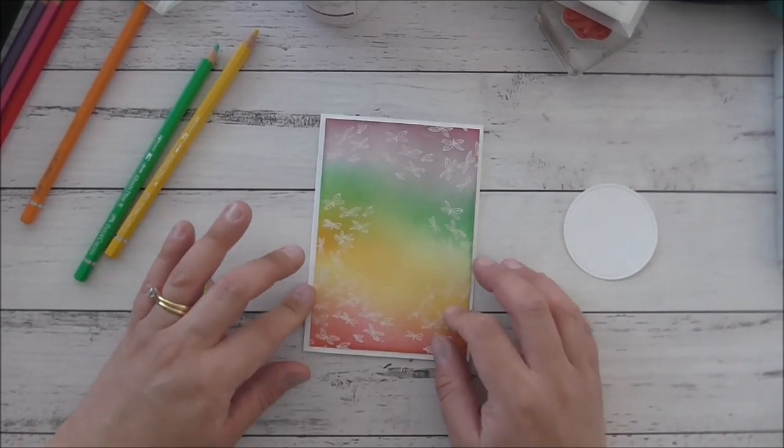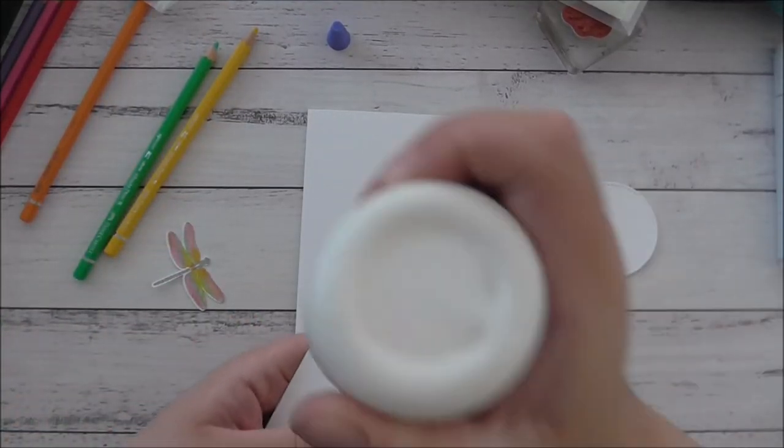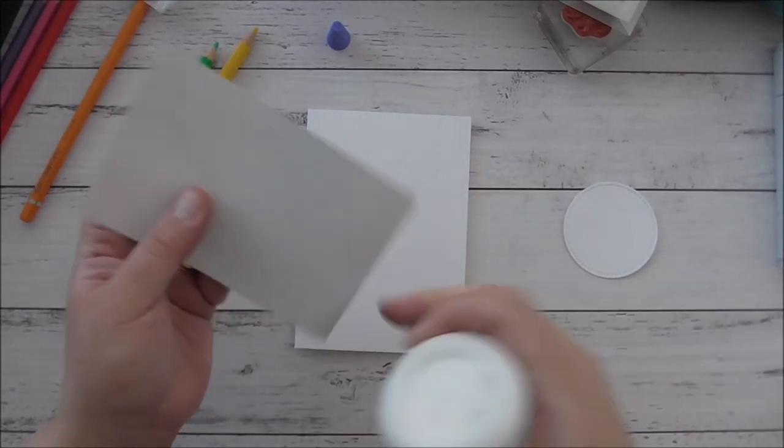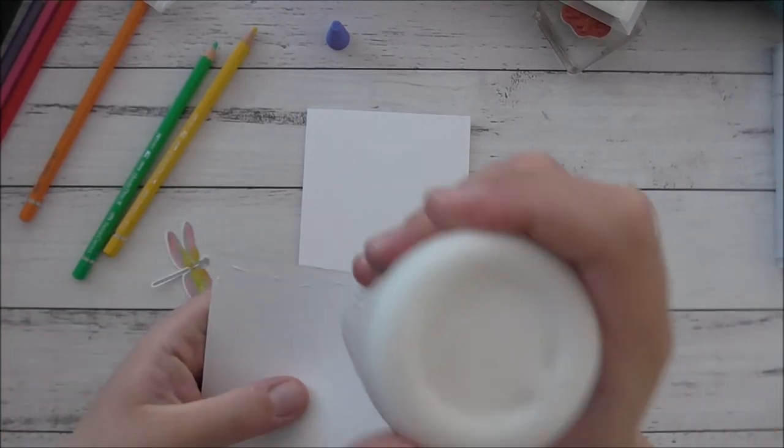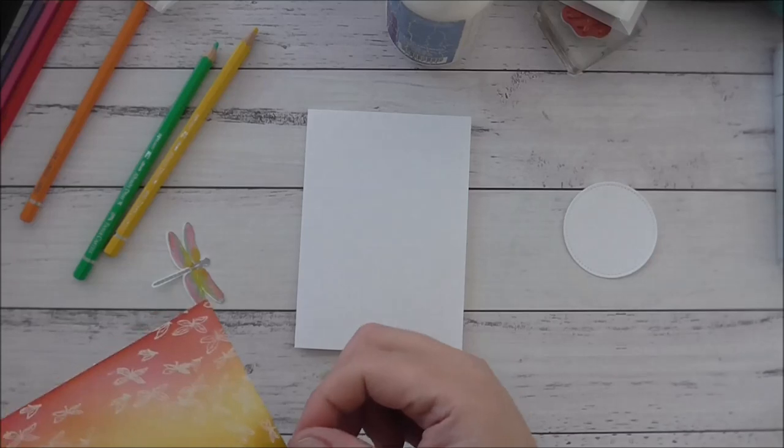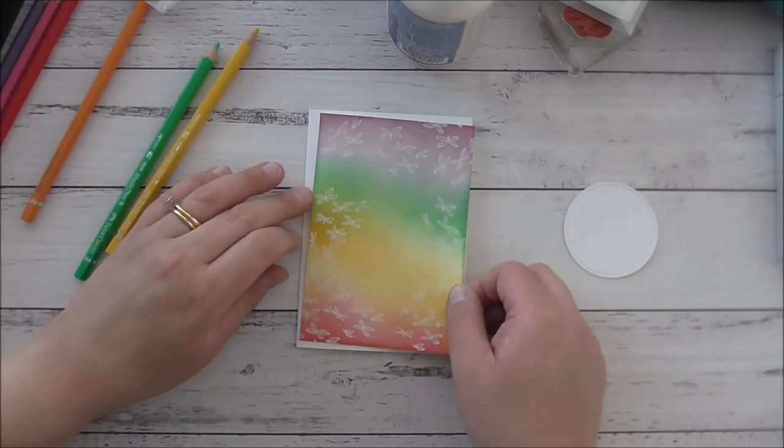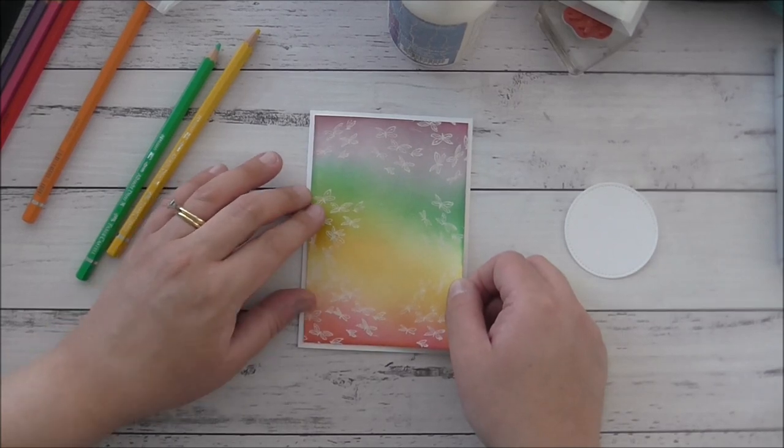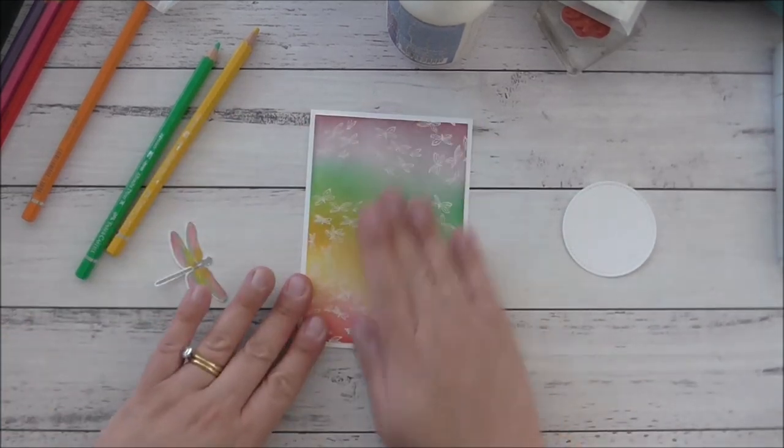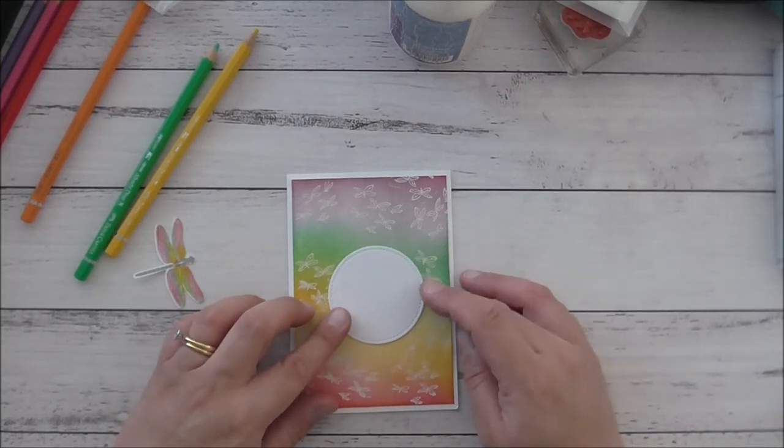So I'm just going to pop my front panel here on the front and I'll just put some glue just on the edges of the cardstock and pop this up. I think up this way, and I love that the white border around it kind of references the dragonflies. It looks beautiful.